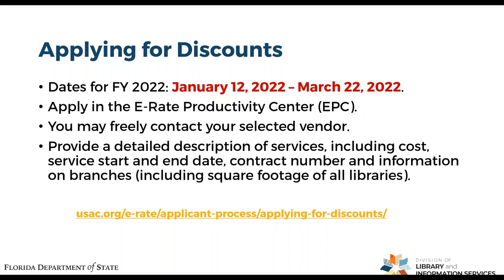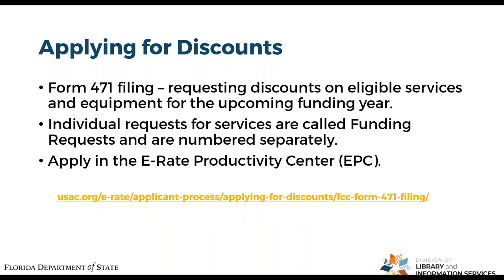The Form 471 is the mechanism by which you apply for funding in EPC. Individual line items are called Funding Requests and are numbered separately as FRNs — Funding Request Numbers. If you're requesting both Category One and Category Two services, or have multiple branches served by different vendors, each individual request for services will be its own FRN.